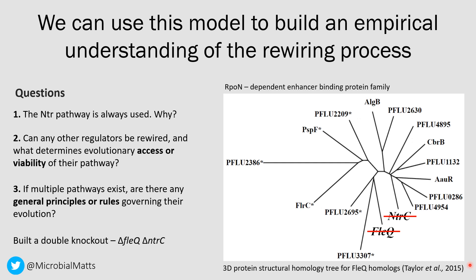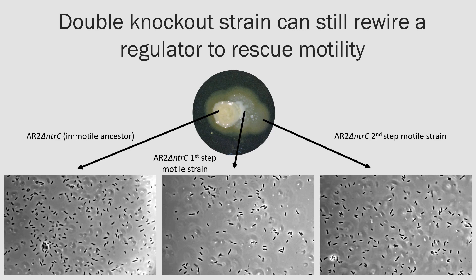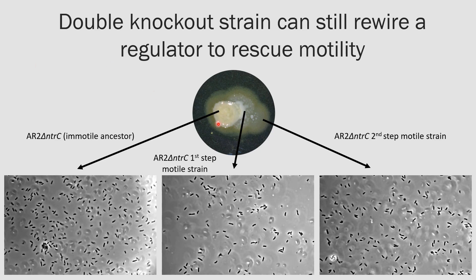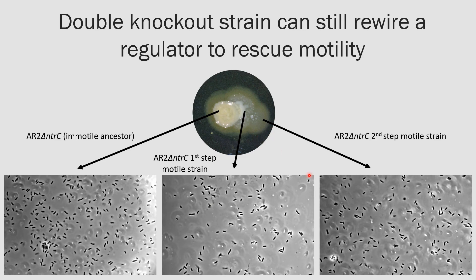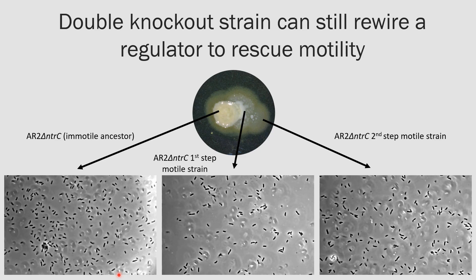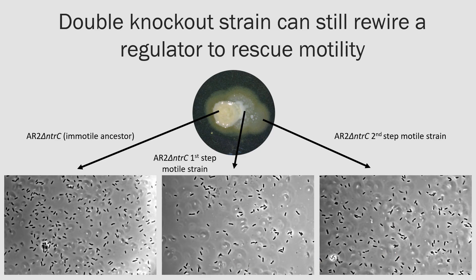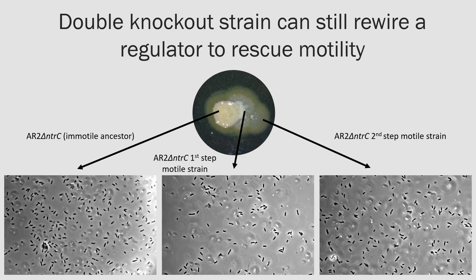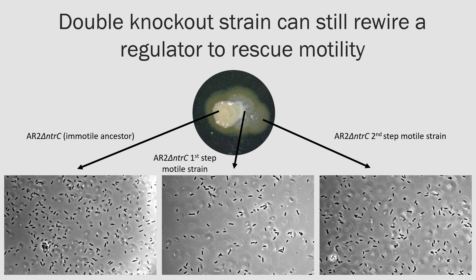The method I used is a double knockout mutant of fleQ and NTRC, which forces evolution to take one of the alternative rewiring pathways if it plans to rescue motility. What I find is that this double knockout strain can still rewire a regulator to rescue its motility. We get a first step motile strain, followed by a faster swimming second step motile strain. When we look at these cells under the microscope, we see that they are doing classic tumbles and runs, highly indicative of flagellar mediated motility.